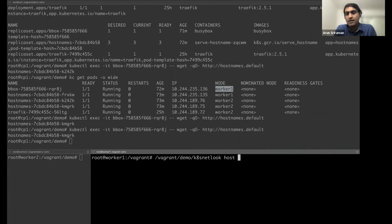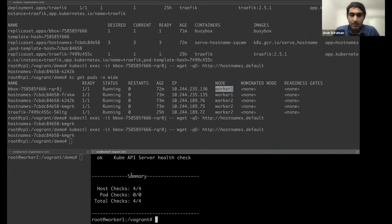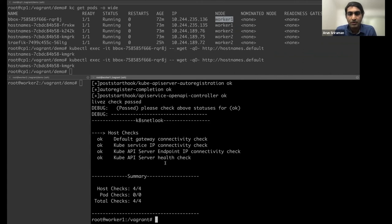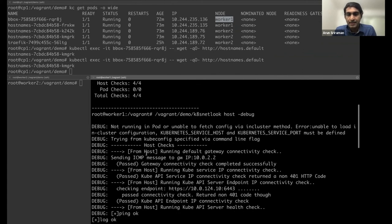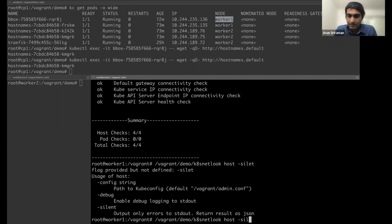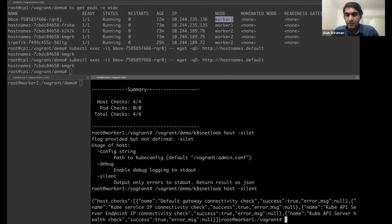So on worker one, I have k8s-netlook installed here. So if I do a vagrant demo, this is where my k8s-netlook binary is. If I do a host check and run it, I'm going to get a bunch of checks. And what it's saying is my cluster looks healthy. Everything looks good. And you can run a debug command that gives you more information of what it did and how it did all of these tests.